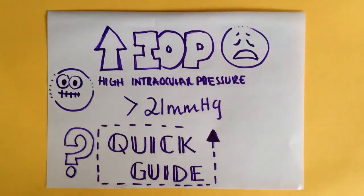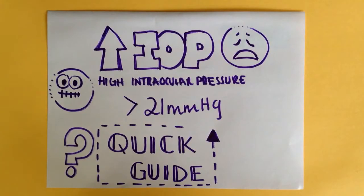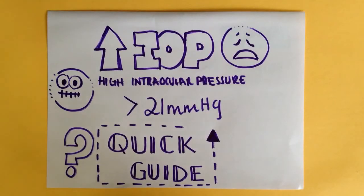As it's RC Optometry, let's get straight into it. A patient walks into your room for a routine eye exam. Everything's going pretty smoothly — preliminary tests are normal, simple refraction — then you measure IOP and what do you know, it's high. So you panic? Well, there's no need to. This video is going to provide you with a brief quick guide on how to manage this patient.